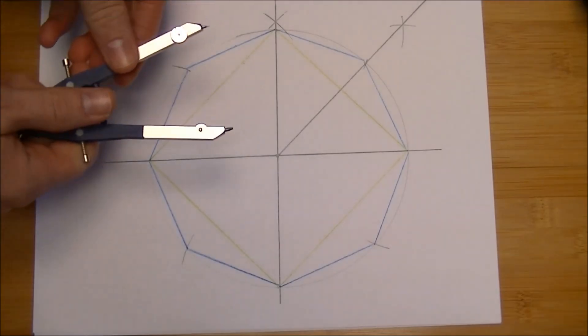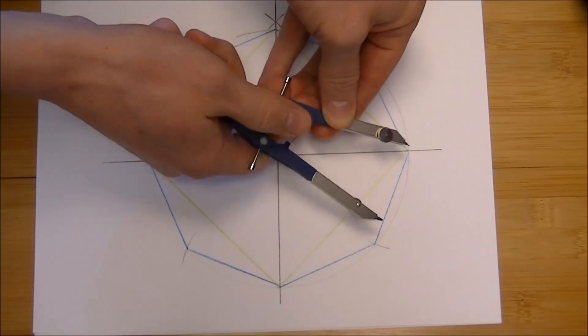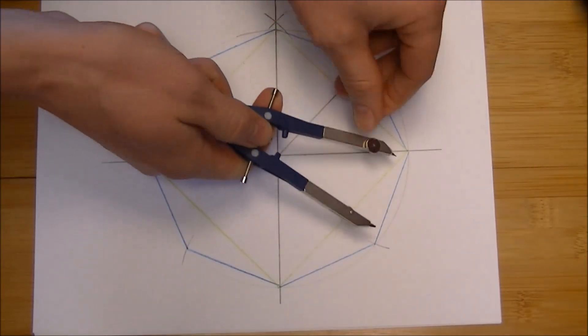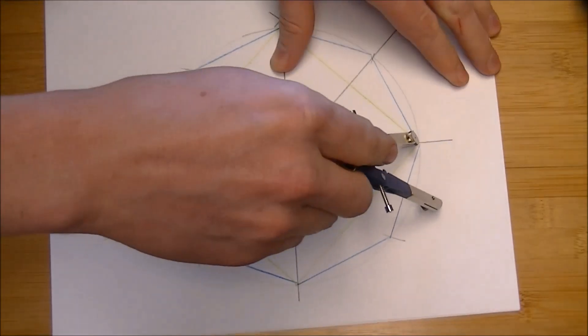Now, if I want to make a 16-sided figure, I'm going to follow exactly the same steps. I'm going to bisect one of these lines. It doesn't matter which line segment I do because they all should be congruent.